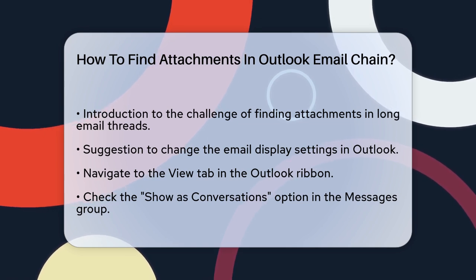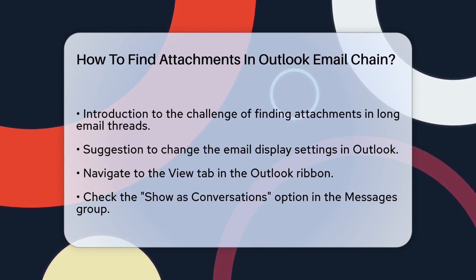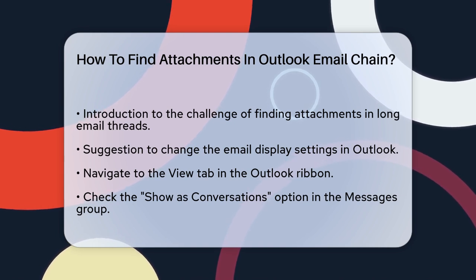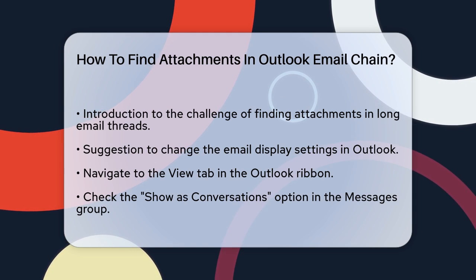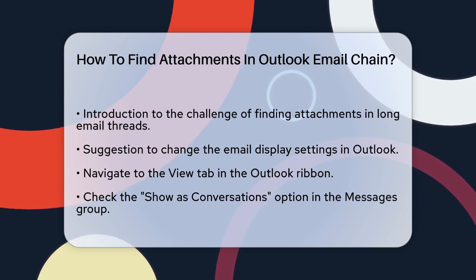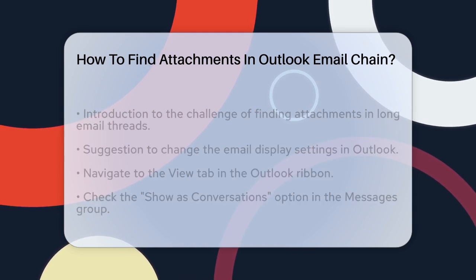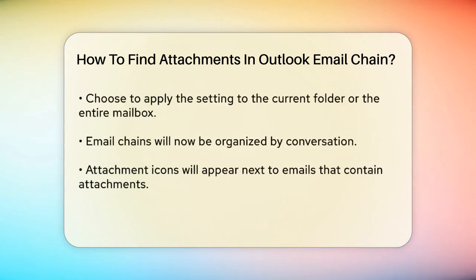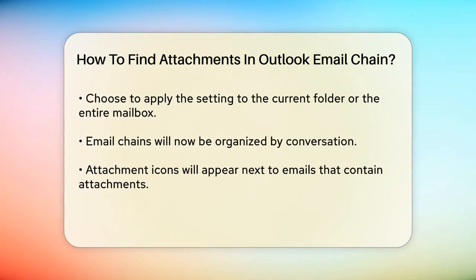First, you need to change how Outlook displays your emails. Go to the View tab in the Outlook ribbon and check the Show as Conversations checkbox in the Messages group. When a dialog box pops up, select whether you want to apply this setting to the current folder or the entire mailbox. Once you've done this, the email chain will be arranged by conversation.